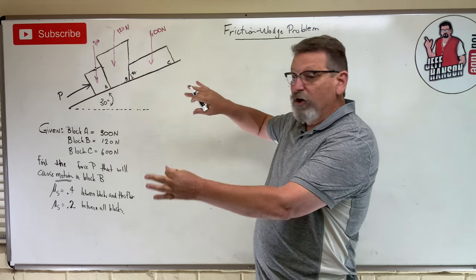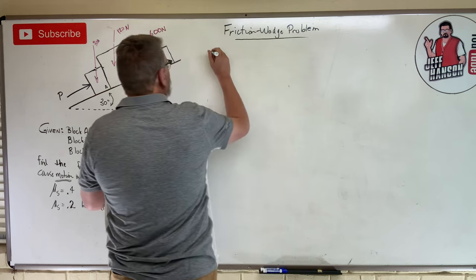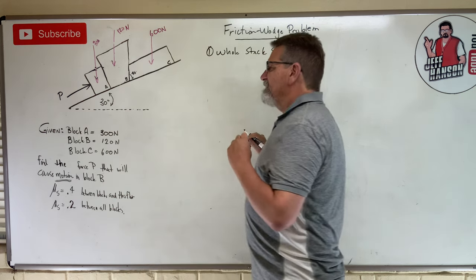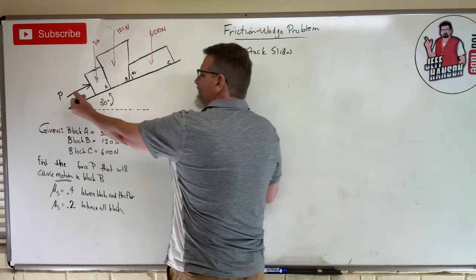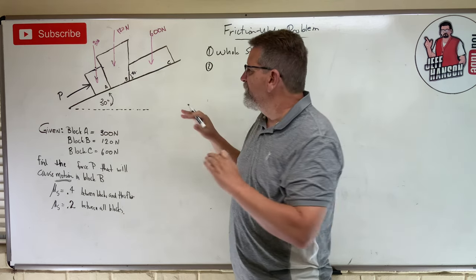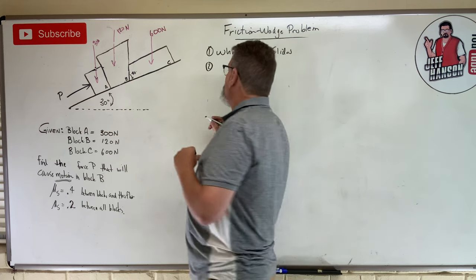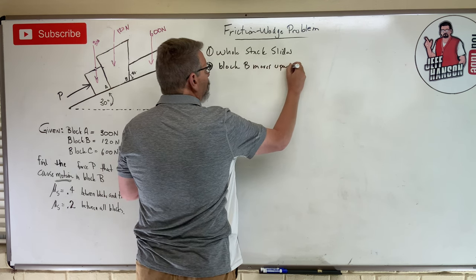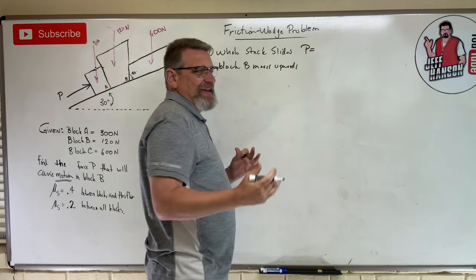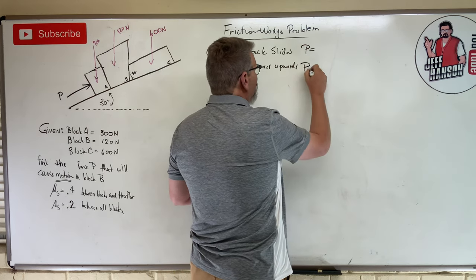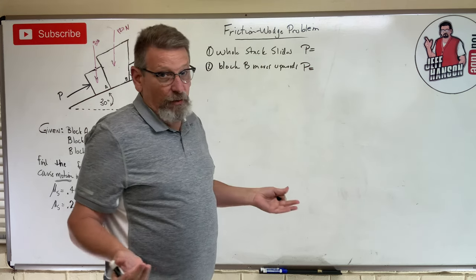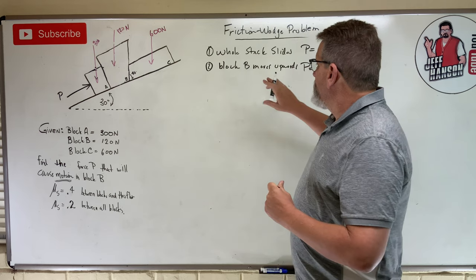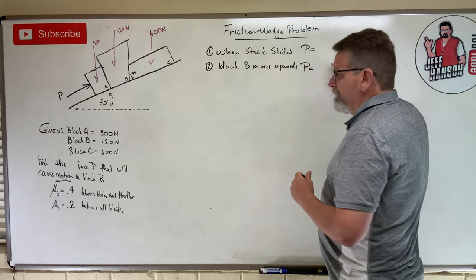Scenario one: I push and the whole stack slides up the hill — whole stack slides. Scenario two: I push on block A, block C doesn't move, and block B squirts upward. We have to find force P for each scenario. We're going to choose the smallest of those two values, because the smallest one is the one that happens first. We must solve both scenarios before making a decision.